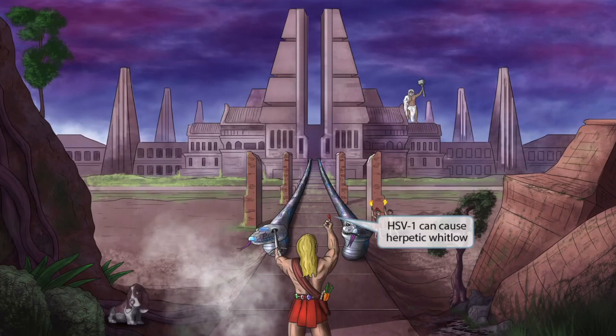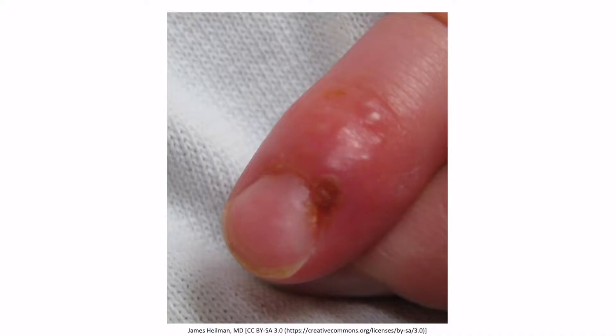Did you notice that Hercules was lifting up a bloody finger into the air? The snakes bit his finger, and now Hercules is lifting it up in disbelief. The wound on the finger should make you think of herpetic whitlow, which is a painful dermatological condition associated with HSV1 that affects the fingers. This is an image of herpetic whitlow — the patient appears to have several vesicles on an erythematous base isolated to the finger. Typically, herpetic whitlow presents as a single vesicle or a cluster of vesicles on the finger.